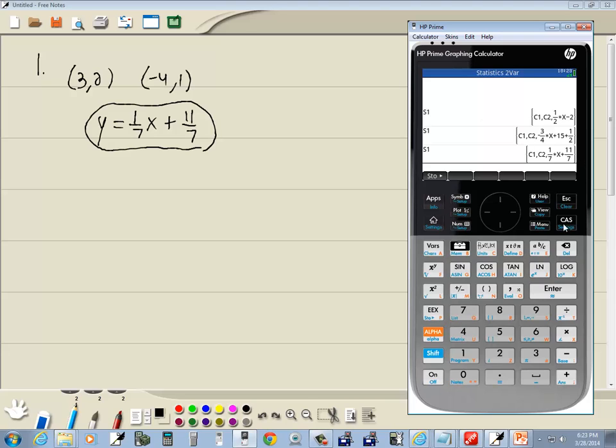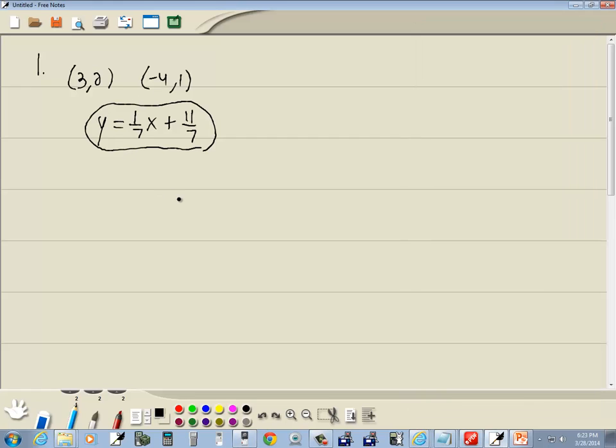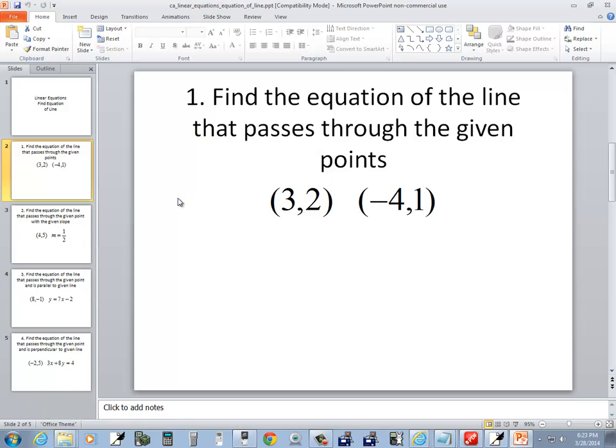Now if you press fraction again, it'll put it in mixed number form. So instead of 11/7, you've got 1 and 4/7. If you press the fraction button again, it'll put it back into decimals. So that's how you can flip back and forth between the different forms. And that's how you find the equation of a line given two points. Let's look at our second problem.